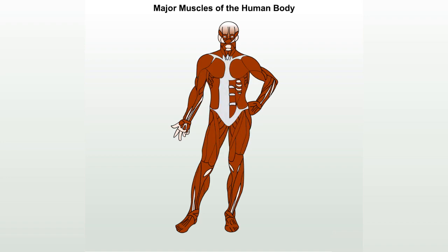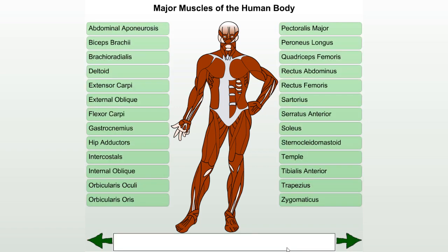Major muscles of the human body. Follow along as we roll the cursor over each muscle name to see its corresponding location on the body. Read the white box at the bottom of the screen for any additional information about the muscle.